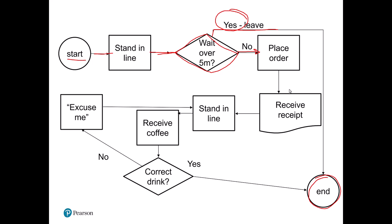Okay, so we go ahead and we place our order. We then get a receipt. And again, you can see we're using a different symbol here to kind of show that it's a piece of paper. Then we're going to stand in line and wait for our coffee, receive the coffee. Now, sometimes things go wrong. So, if it's the correct drink, good, we're done. If not, we're going to go back, we're going to ask the barista for some help, go back, stand in line, receive our new coffee, and hopefully that gives us the correct drink.